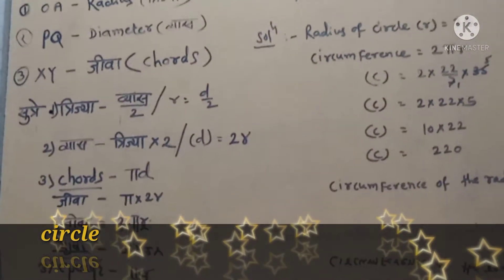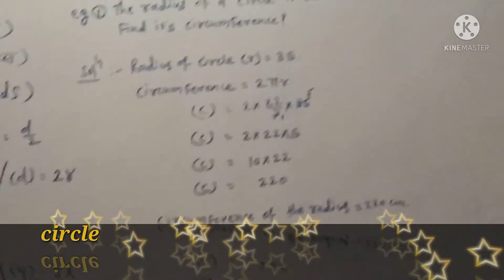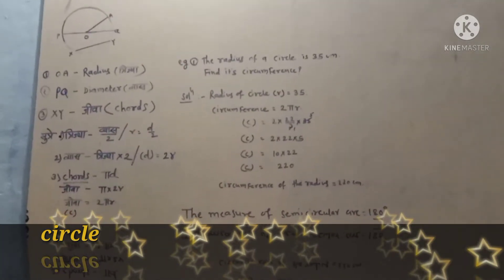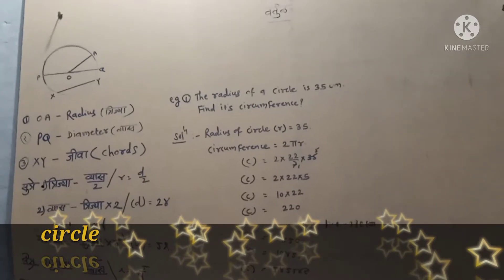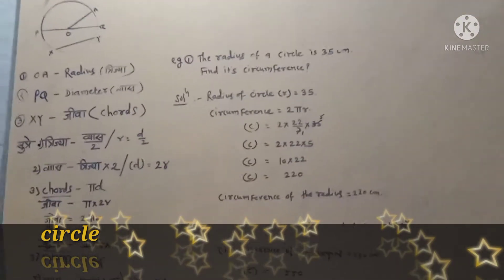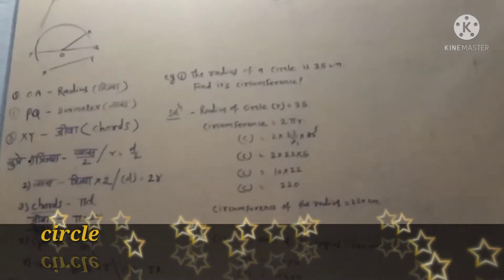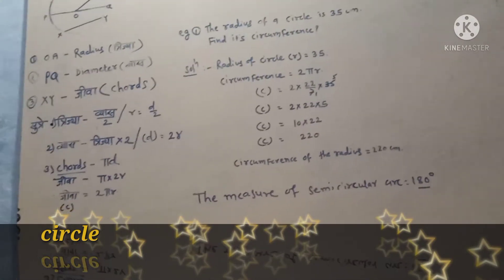Radius is equal to diameter divided by 2. The diameter is equal to r into 2, so D is equal to 2R.